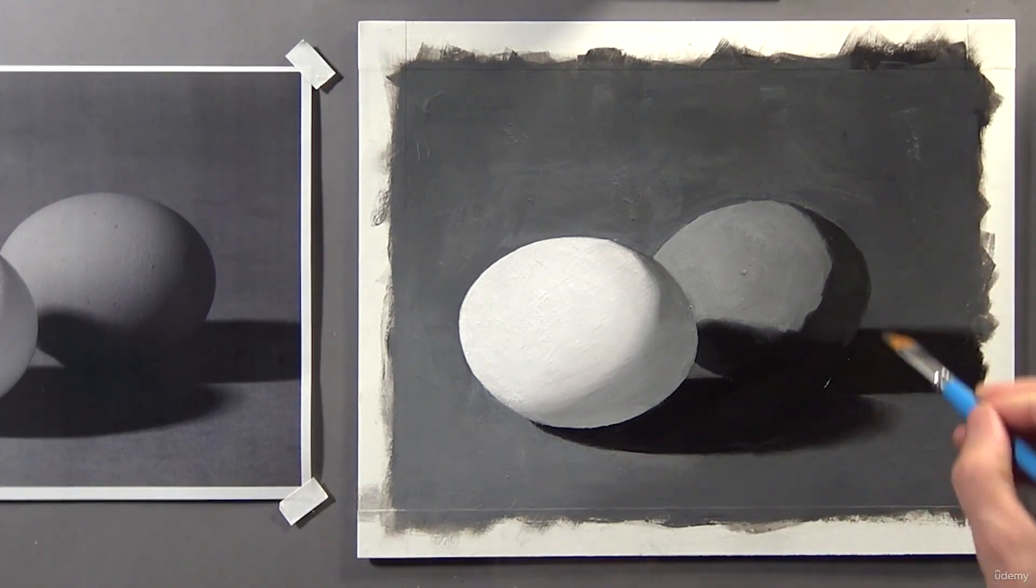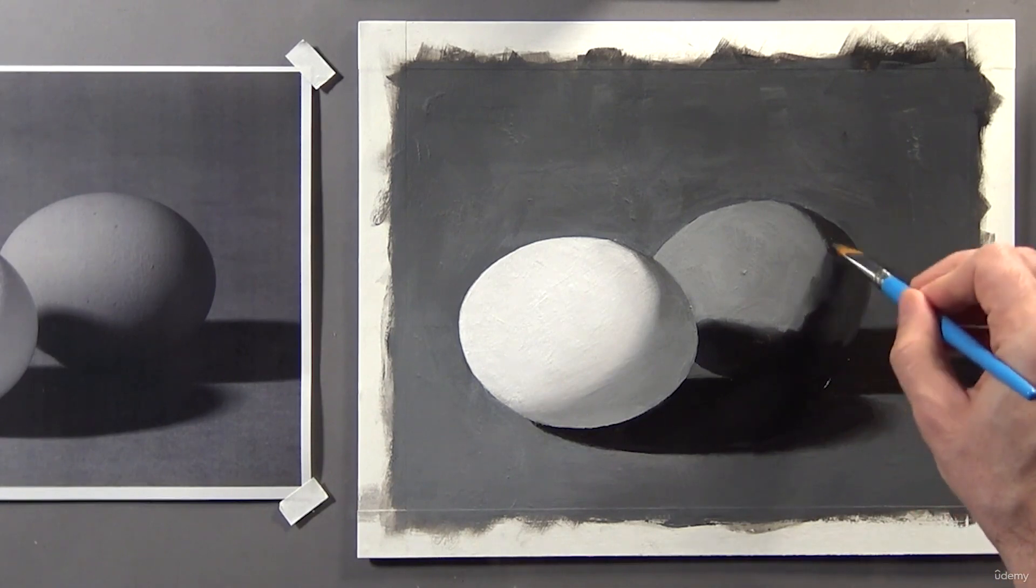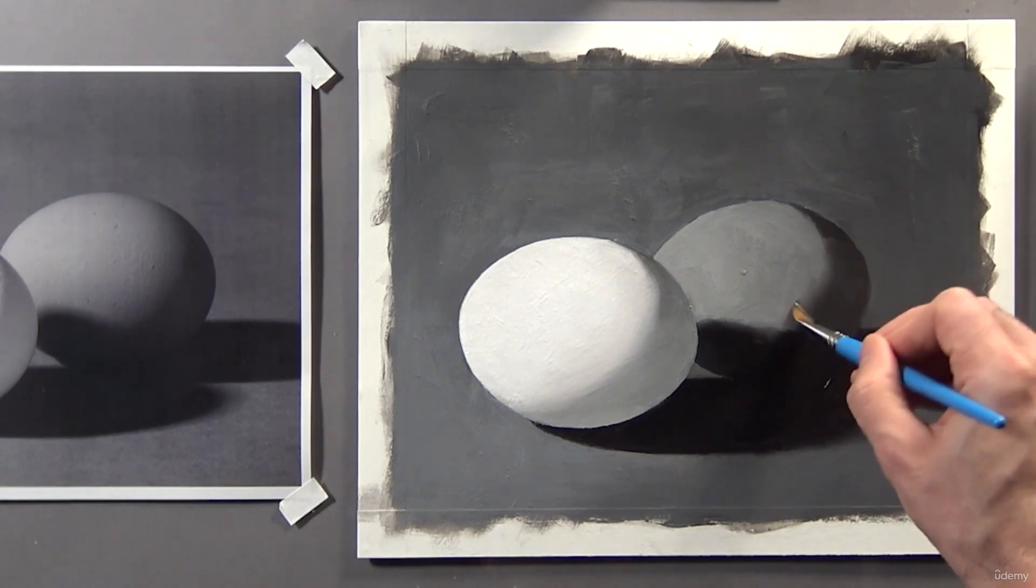And once the shadow is in, start blending where the two values meet. I'm still using a half-inch angular shader by the way.